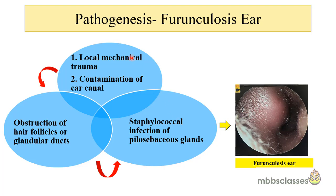Let us see the pathogenesis of furunculosis of the ear. After local mechanical trauma — such as self-cleaning of the ear, contamination of the ear canal due to dirty water while swimming, or local trauma due to ill-fitting hearing aids — it leads to obstruction of the hair follicles and glandular ducts present in the lateral part of the ear canal. This is followed by staphylococcal infection of the pilosebaceous glands, leading to the development of furunculosis of the ear.